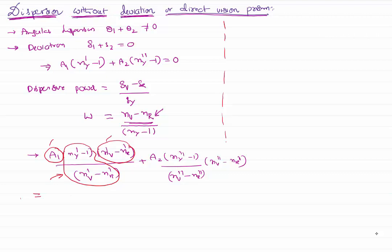By arranging the two prisms who are satisfying this condition in a proper way, if you arrange the two prisms in a proper way such that when a light ray passes through them, it can have angular dispersion.